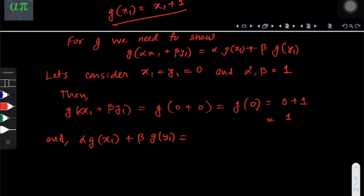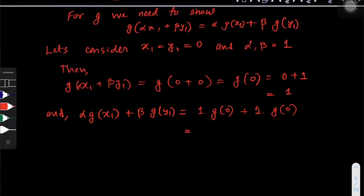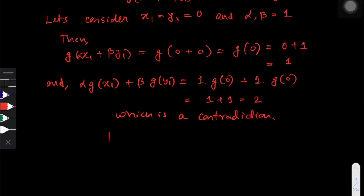Let's see what we get. So alpha is 1 and this is just g of 0, but x₁ equals to 0. Beta is 1 and this is also x₁ is equal to y₁ and y₁ is also 0, so we get 1 plus 1 which is equals to 2, which is a contradiction. Hence g is not a linear function.